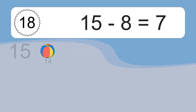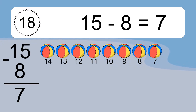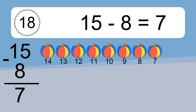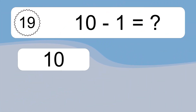15 minus 8 equals what? 15 minus 8 equals 7. Let's count it: 14, 13, 12, 11, 10, 9, 8, 7.